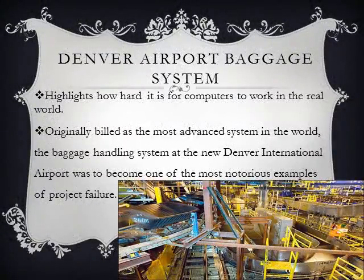The Denver airport baggage system was originally planned to automate and handle the baggage of the entire Denver International Airport, but the software proved to be far more complex than originally believed. The problems ended up building until there was a widespread failure, resulting in the complete airport sitting idle for 16 months while engineers worked on it, causing wide economic problems and ultimately the shutting down of the airport. This highlights how hard it is for computers to work in the real world.